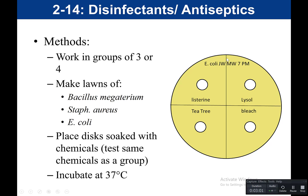When you do your lawn and swab the whole plate, you're going to take these discs — little filter papers — and they're going to be soaked in the various chemicals. One disc would be soaked in Listerine and placed on the plate, one soaked in Lysol and placed on the plate, same thing with tea tree oil and bleach. Once you put those discs soaked in chemicals on your plate, you would put it in a 37-degree incubator and incubate for 48 hours.